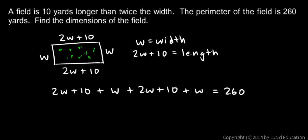Now this is a big equation, but I can make it a lot simpler by looking at the like terms. There's a 2W, a W, a 2W, and a W. All of those can be combined. 2W plus W plus 2W plus W is 6W. So I have 6W over on the left. And then I have this 10 and this 10. Those combine to give me a 20. So I have 6W plus 20 on the left, and that equals the 260.